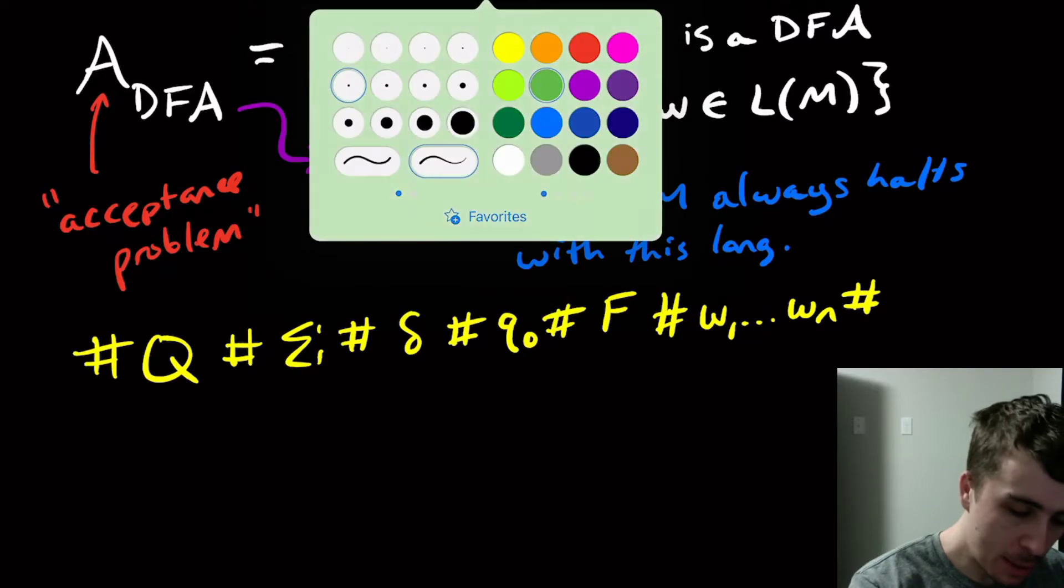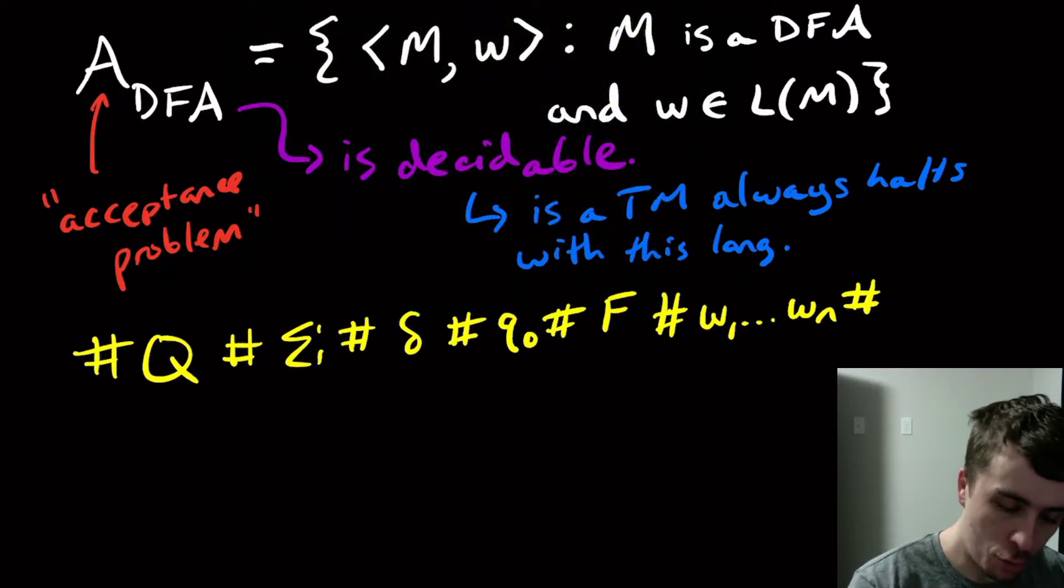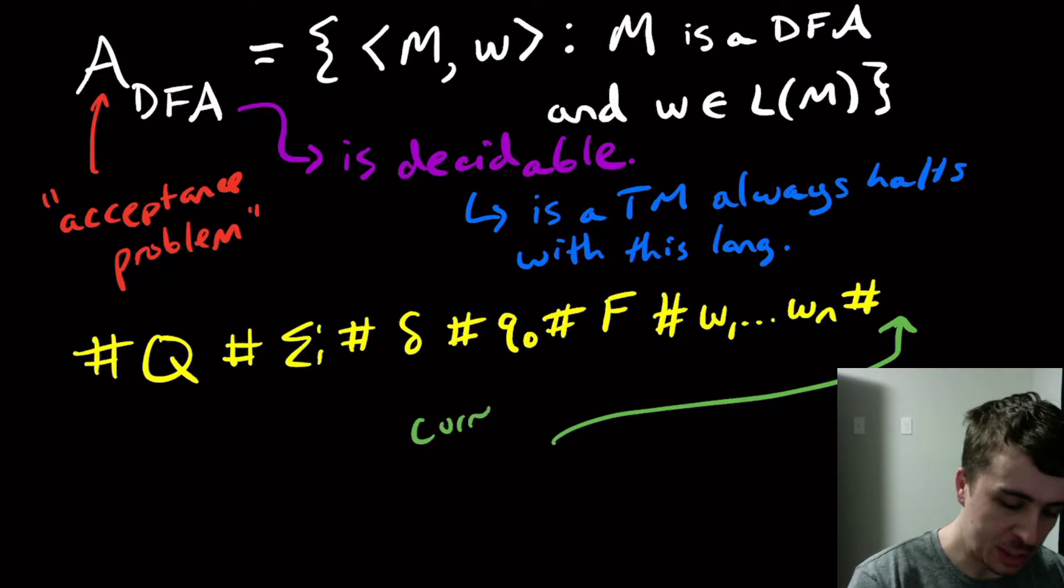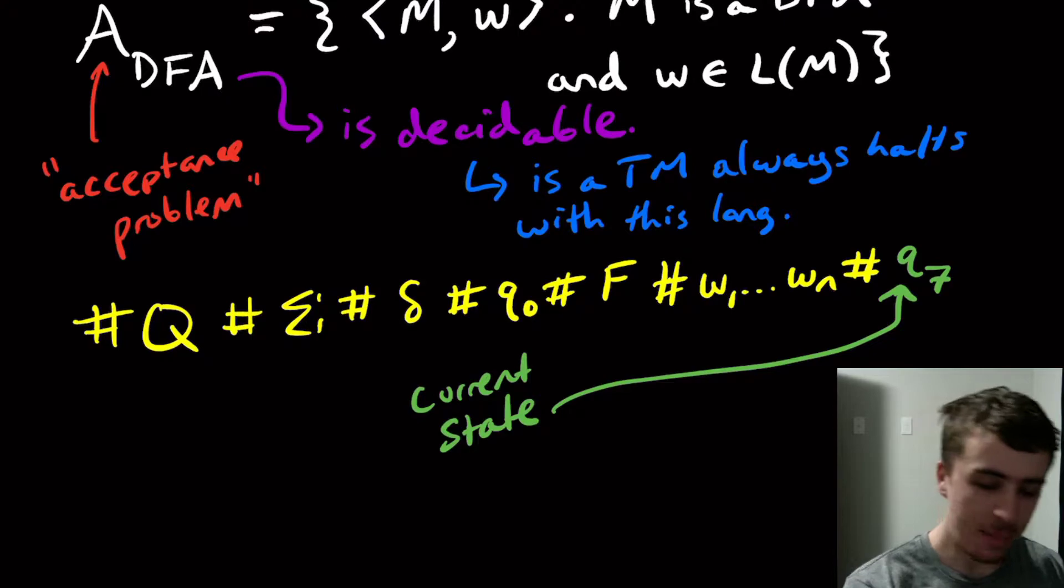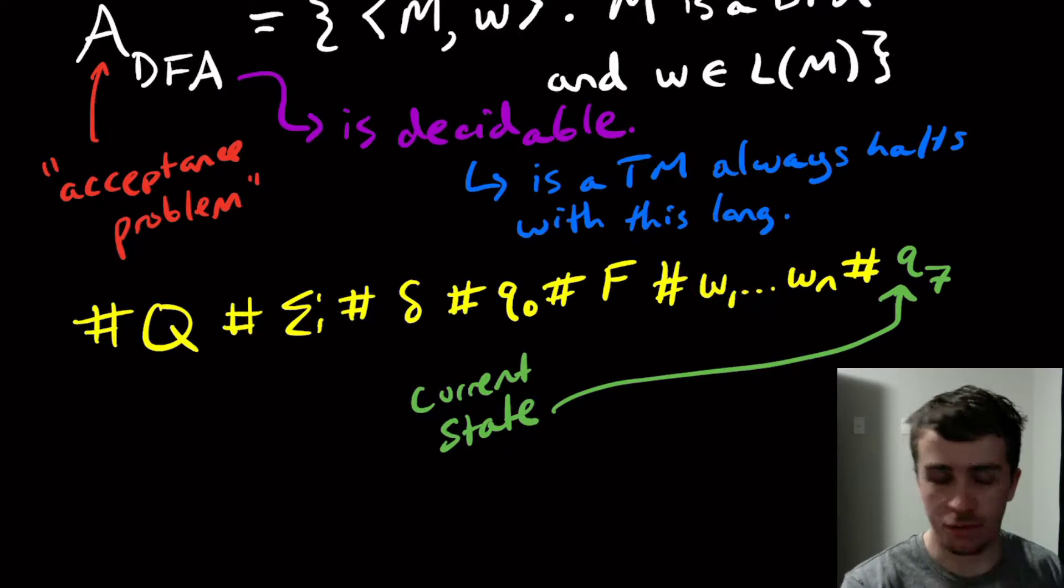What we need to do is keep track of what character we're currently looking at and what current state we're in. So what I'm going to suggest is that we put over here, right there, we put the current state that we are in. So let's just say that it was like q sub seven, for example.